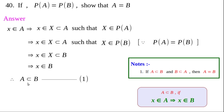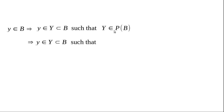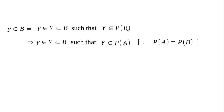Similarly we can prove B⊂A. Suppose y∈B. There exists a capital Y that is a subset of B with small y∈Y. Since Y⊂B, capital Y∈P(B). Since P(B) = P(A), capital Y∈P(A), meaning Y is a subset of A. Since y∈Y and Y⊂A, y is an element of A.